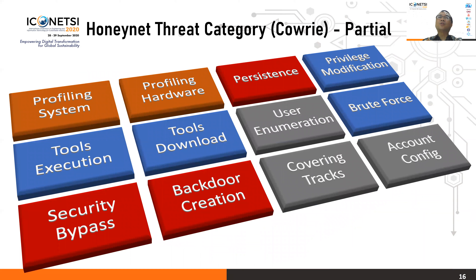Here are some of the threat categories detected in the Kauri honeypots. For example, there are profiling systems — commonly used by attackers to profile our system, including hardware type and operating system. At the same time, attackers also perform user enumeration. Sometimes they also create backdoor ports to communicate with their command center. These are some of the threat categories detected, and there are many others we cannot list individually.